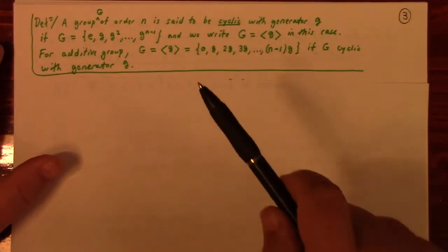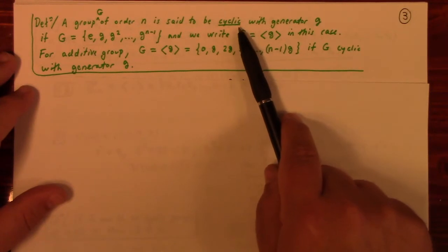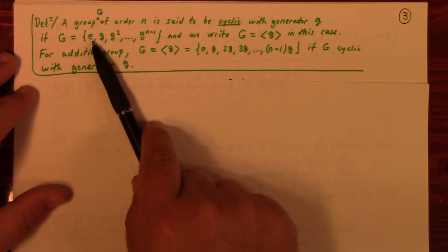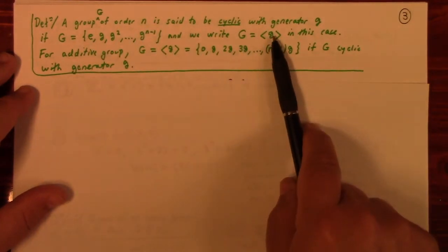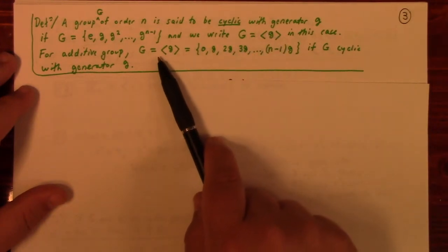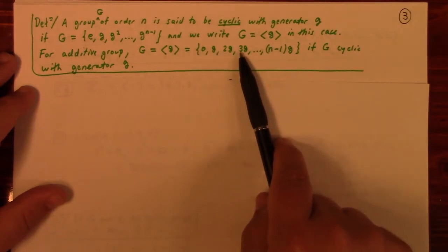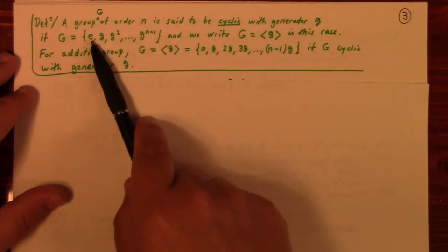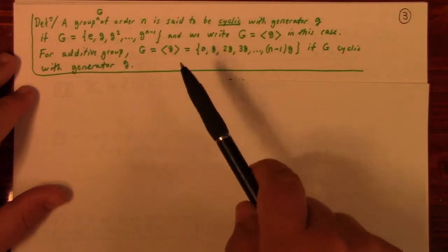A group G of order n is said to be cyclic with generator g if G = {e, g, g², ..., g^(n−1)}, and we write G = ⟨g⟩. For an additive group, generated by g means multiples: g, g+g, g+g+g, all the way out to g added to itself n−1 times. Here e is the multiplicative identity, sometimes called 1; in the additive case, e is 0.